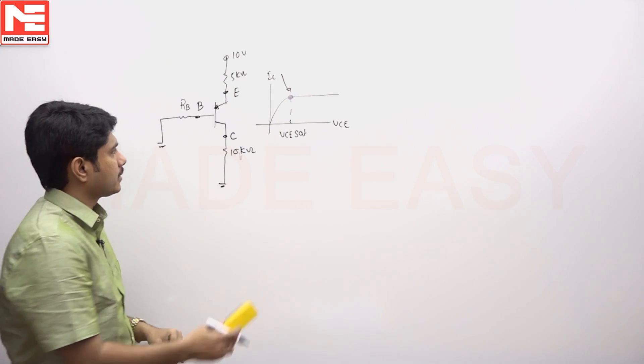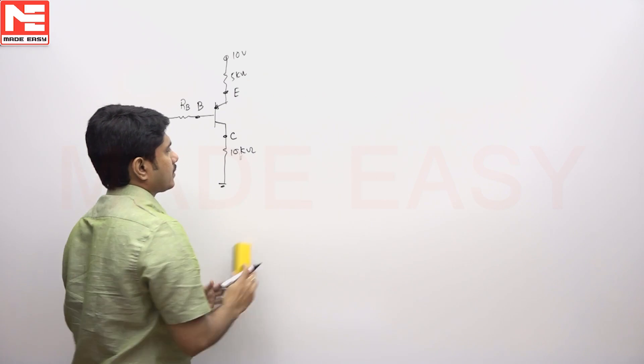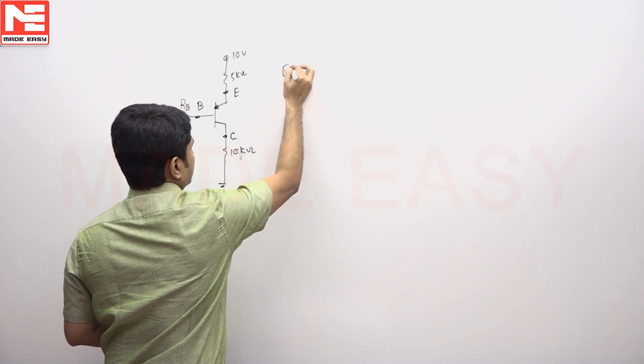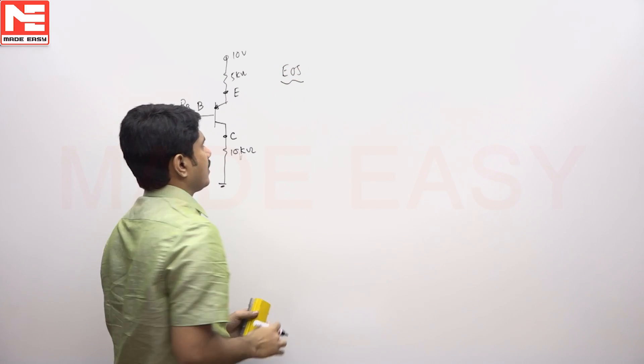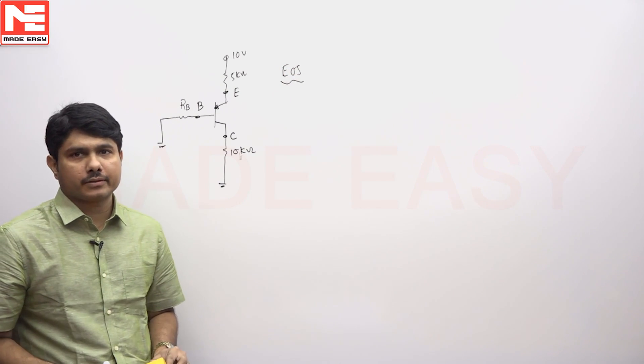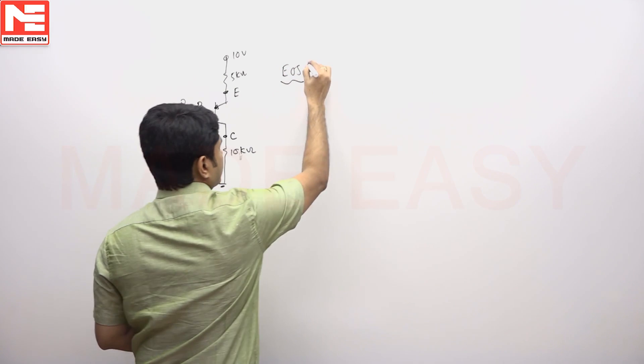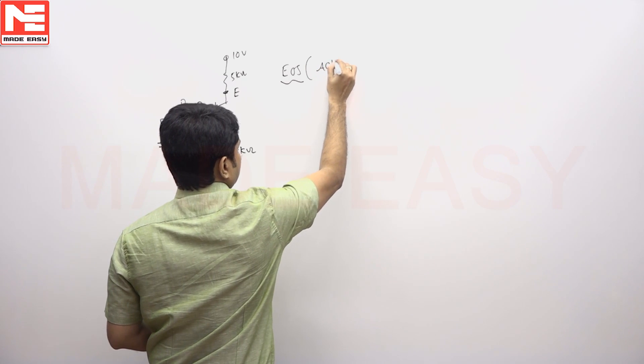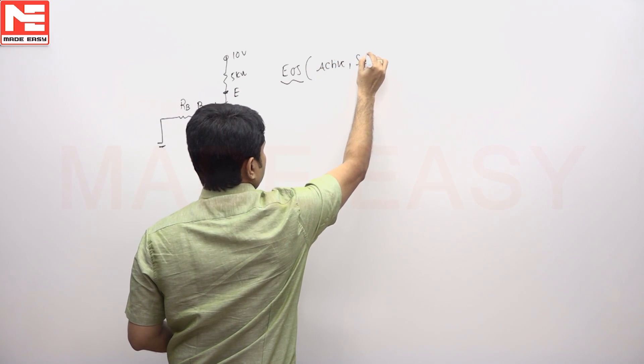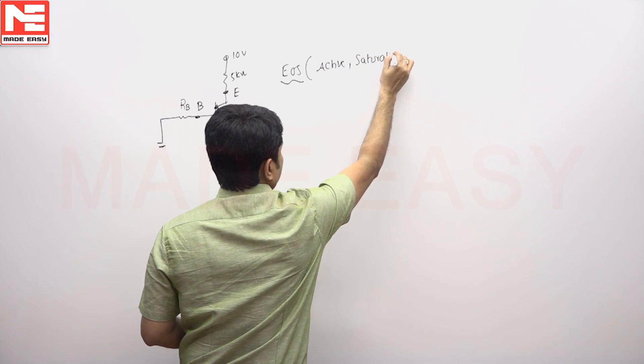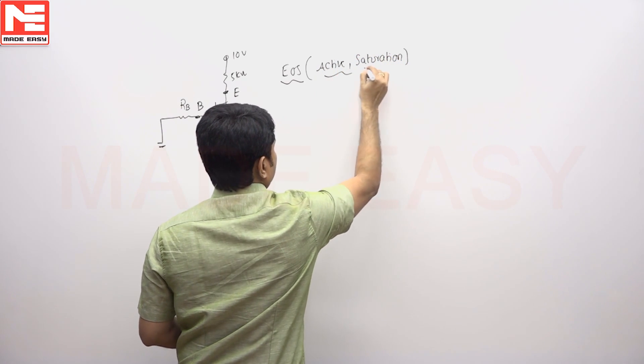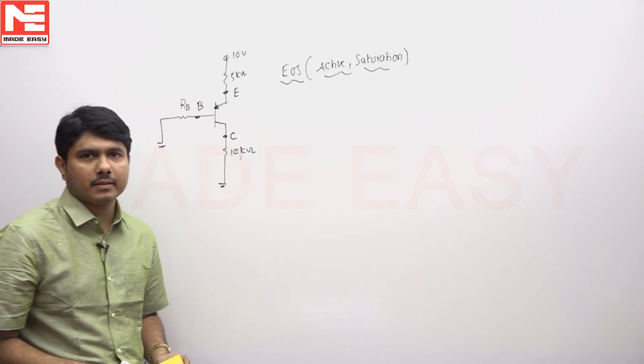So to get this answer first boundary conditions that is called EOS condition. EOS is called as edge of saturation. In edge of saturation active condition and saturation condition are valid. Both conditions are valid in edge of saturation.